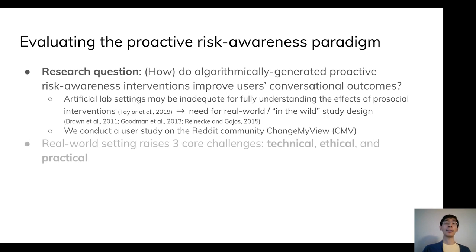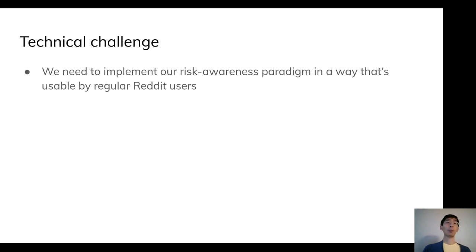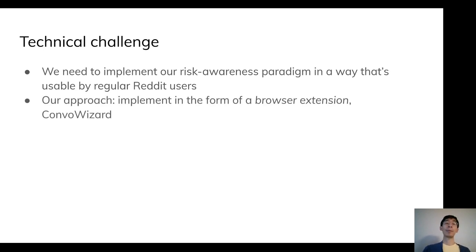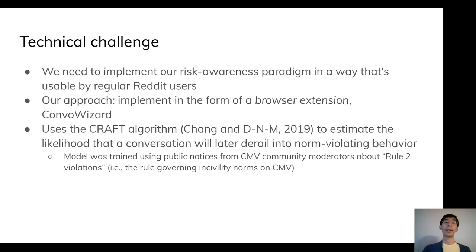Like any in-the-wild study, this real-world setting raises three core challenges: technical, ethical, and practical, which we will now discuss. First, the technical challenge. We need to implement our risk awareness paradigm in a way that's usable by regular Reddit users. Our approach is to implement it in the form of a browser extension, which we call ConvoWizard. ConvoWizard is designed to estimate tension in conversations using a forecasting algorithm trained on conversations that end in public notices from CMV community moderators regarding violations of their civility norms.